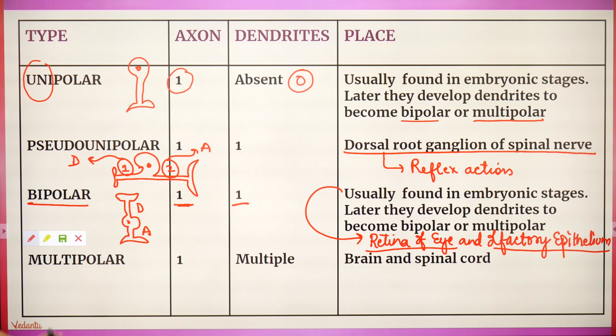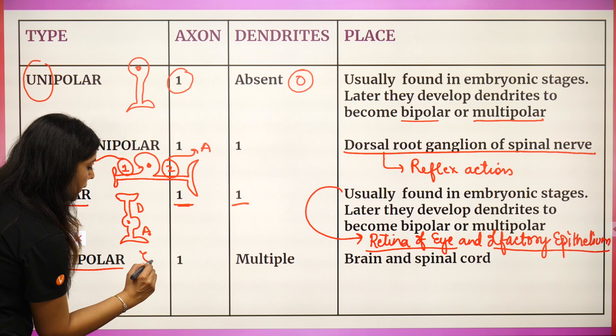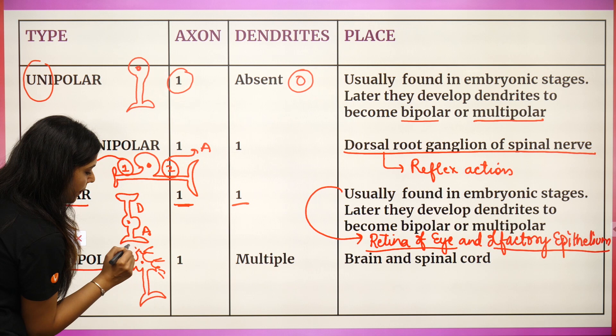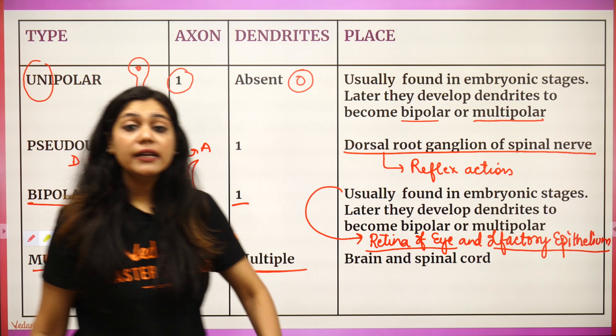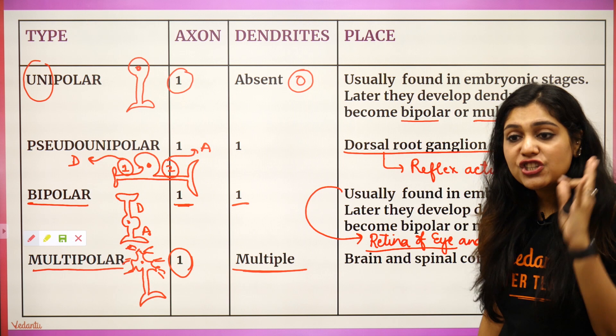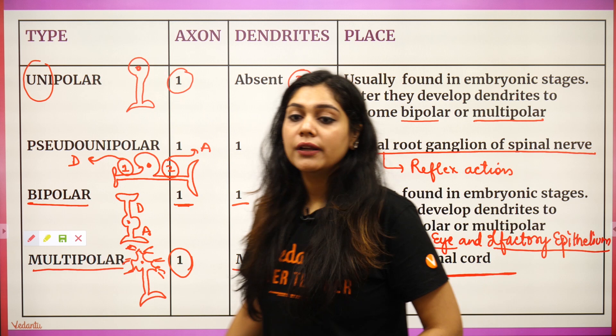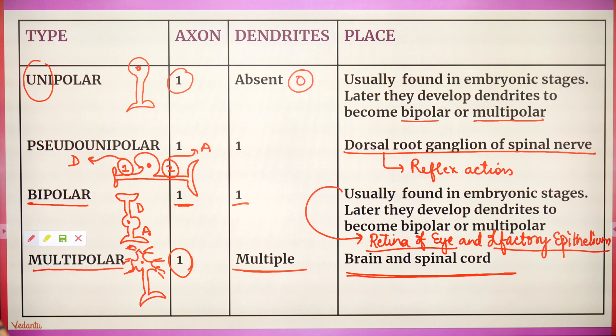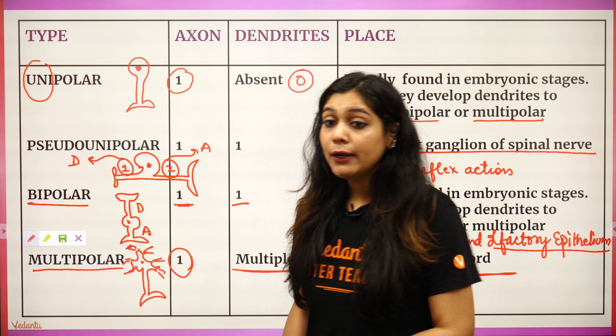Next: multipolar. Multiple poles. It has multiple dendrites but only one axon. In fact, in all types of neurons the axon is always one — it is the number of dendrites which changes. This type you find in the brain and spinal cord. Take a screenshot — these are the quick instant notes for you guys. This is the Neat Mantra and I hope it will be very helpful for you.